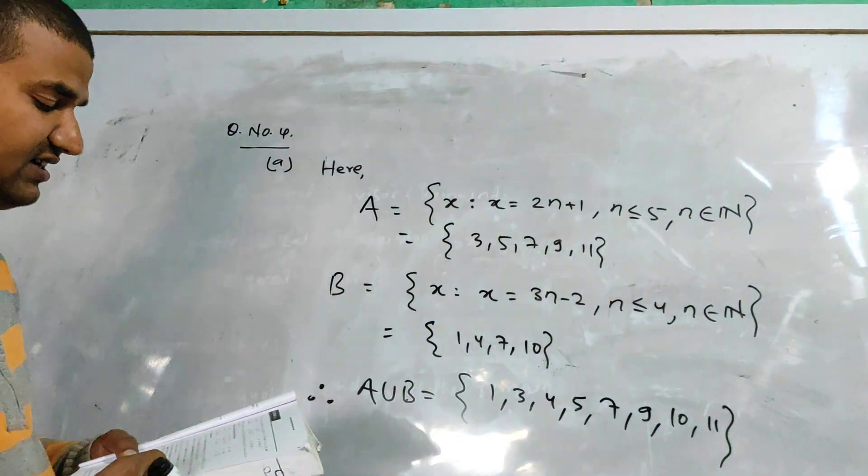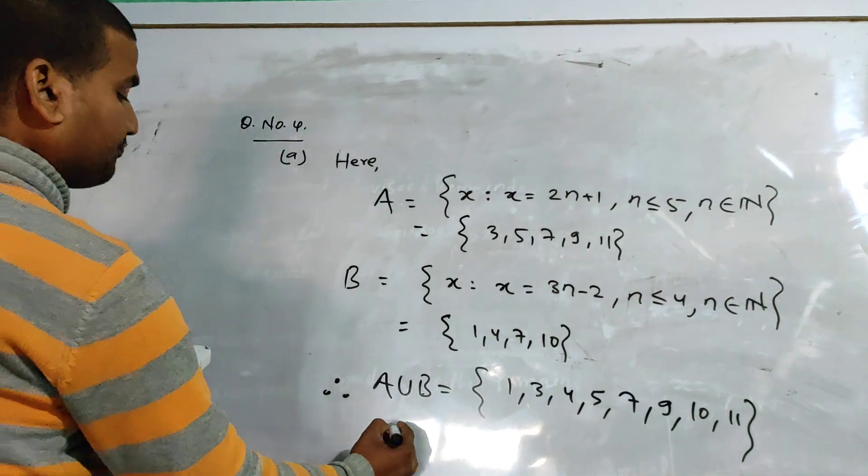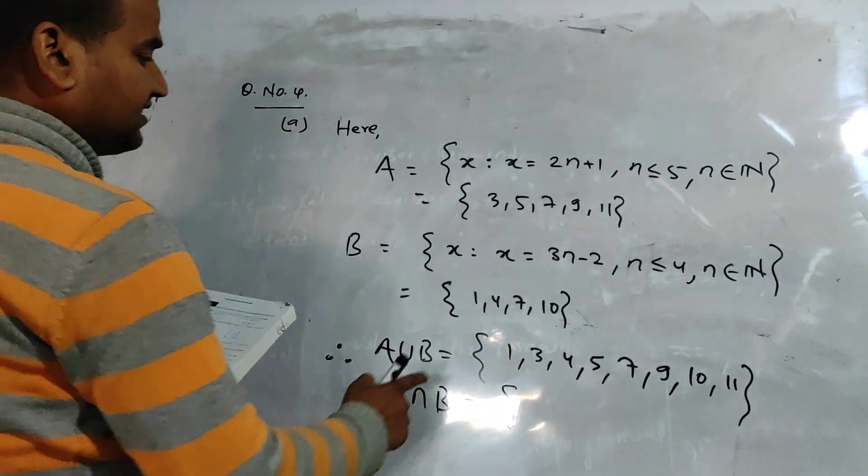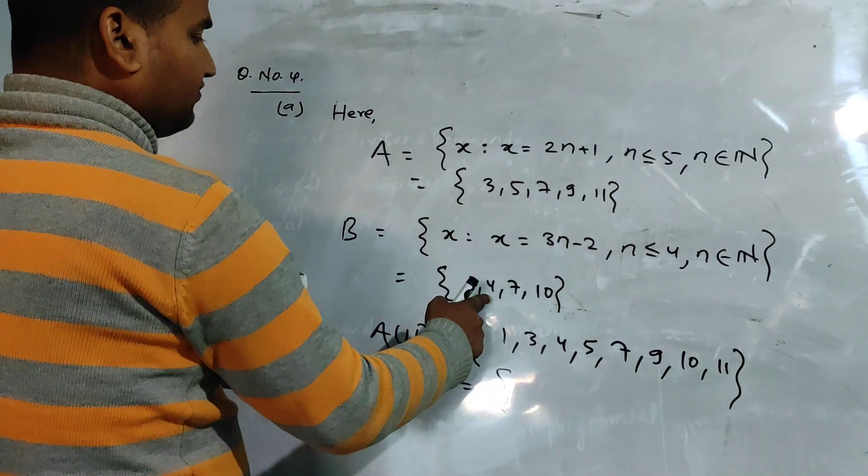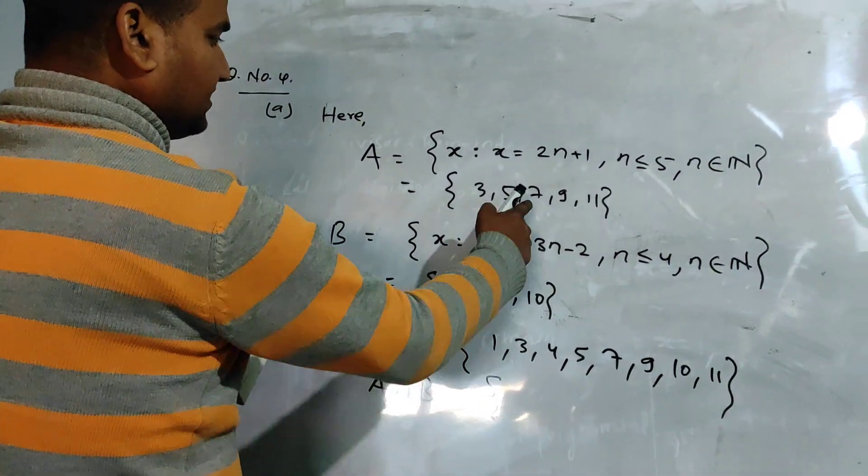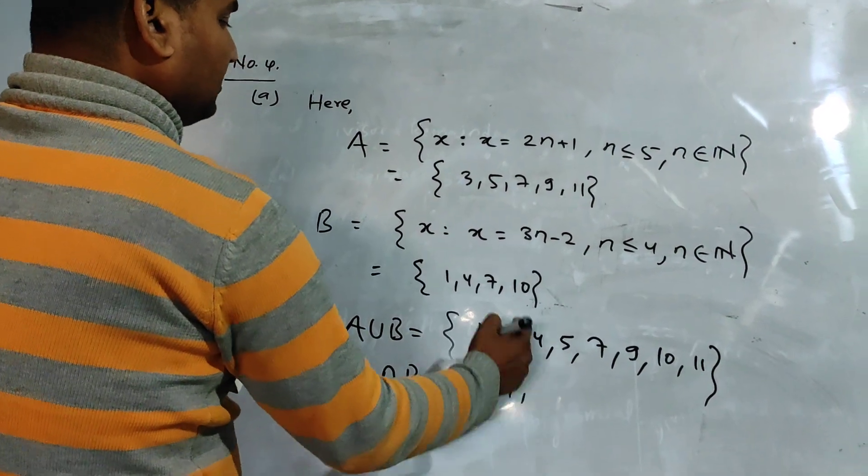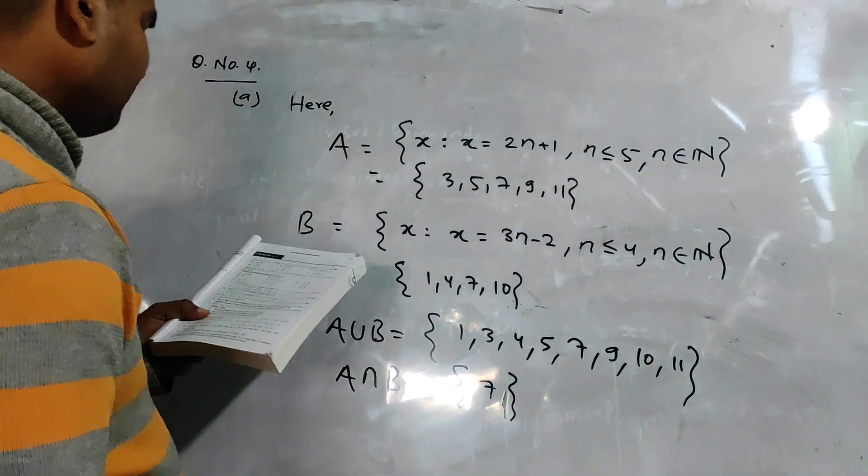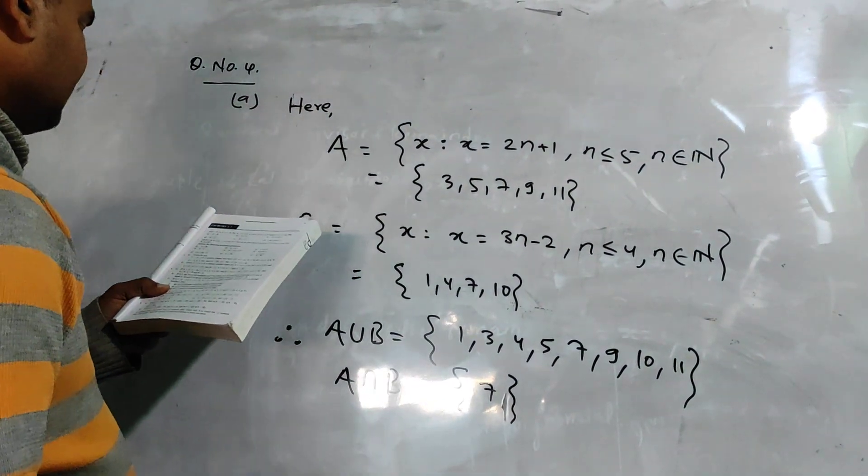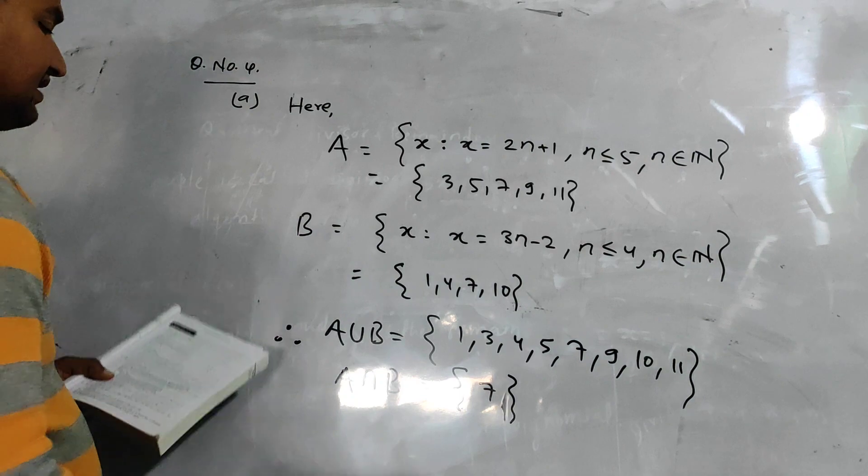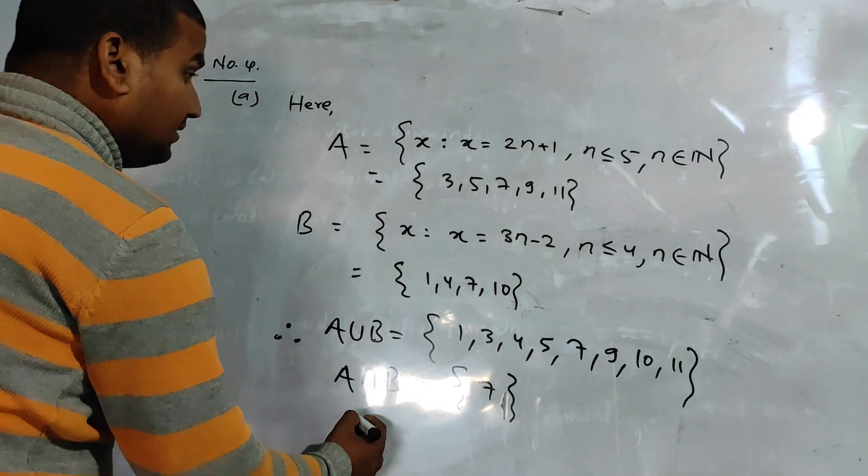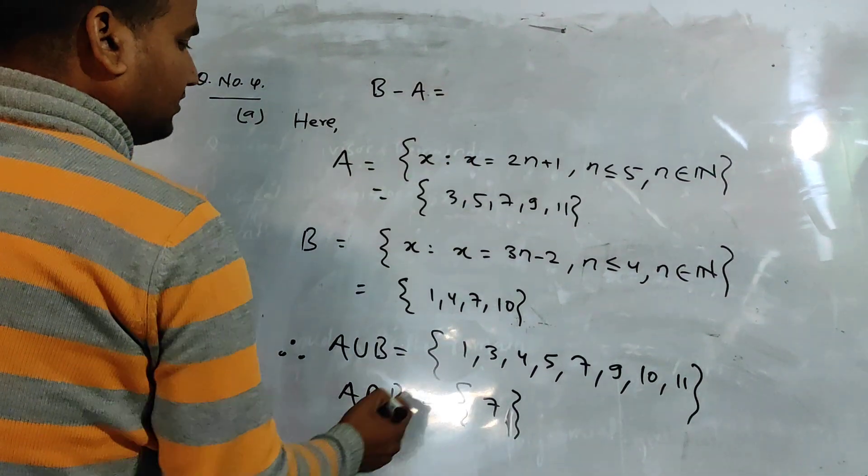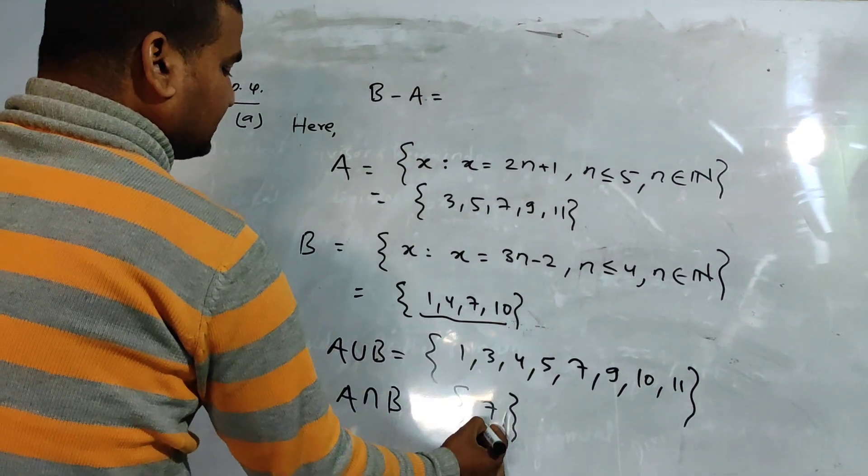We can find the set difference in the same way. A minus B or B minus A. A minus B means elements in A but not in B.